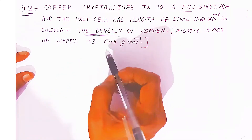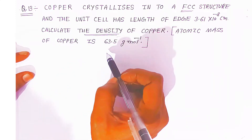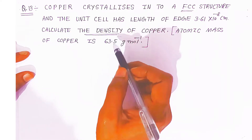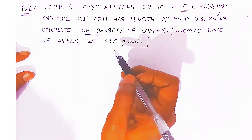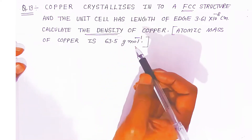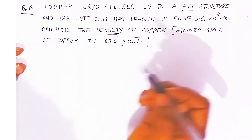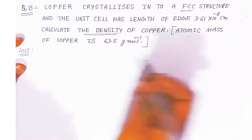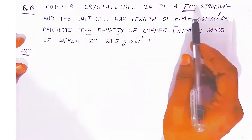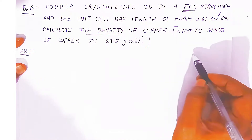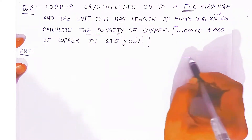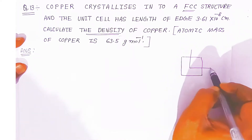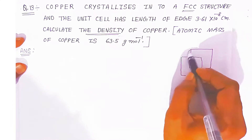The density formula is nothing but mass upon volume. Once you know the mass and divide by the volume, you will get the density. First, in the examination, you have to understand how you are going to write the answer. It is an FCC structure, so you have to draw the cubic unit cell.